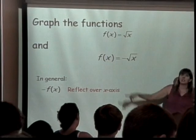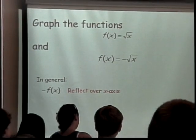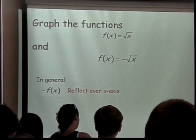What if I put the negative inside? So instead, it's going to be the square root of negative x. What is that going to do to the function?